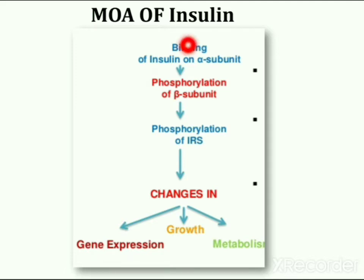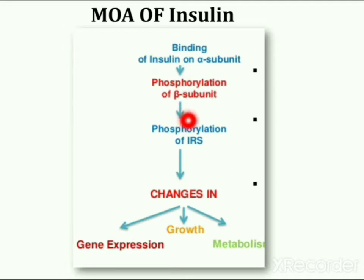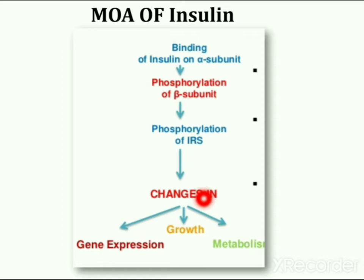Binding of insulin to alpha subunits activates tyrosine kinase activity of the beta subunits. Tyrosine residues in beta subunits are phosphorylated. This then phosphorylates tyrosine residues of insulin receptor substrate, in short form known as IRS. Insulin receptor substrate in turn catalyzes phosphorylation of other enzymes through which the metabolic effects of insulin are mediated.